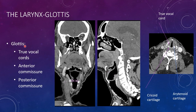At the glottis, you have the true vocal cords, the anterior and posterior commissures — which is where they meet in the front and the back. The true vocal cord is made up of muscle, so it should have soft tissue density. I like to look for the arytenoid cartilage because that's where the vocalis muscle attaches. Here's the cricoid cartilage posteriorly — posterior to that would be hypopharynx, all of this is larynx. On the sagittal view, look for those paired true vocal cords going to the midline.